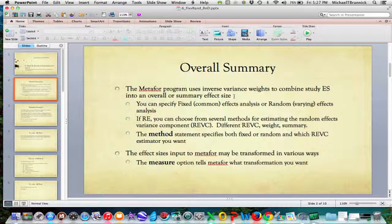If you choose a random effects model, you have a bunch of different methods that you can use for estimating the random effects variance component. Different methods will give you different estimates of the REVC and different weights, thus different summaries and confidence intervals. The method statement specifies both fixed or random and which REVC estimator you want.